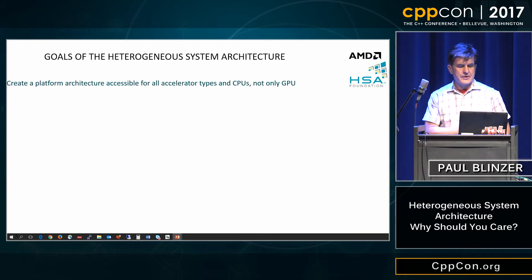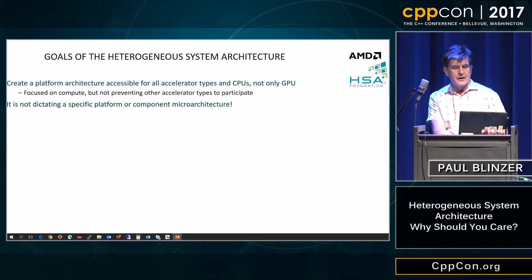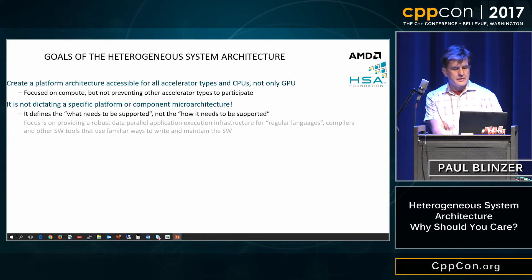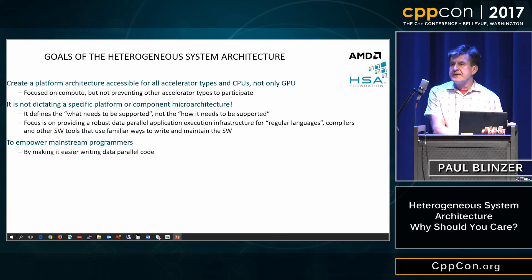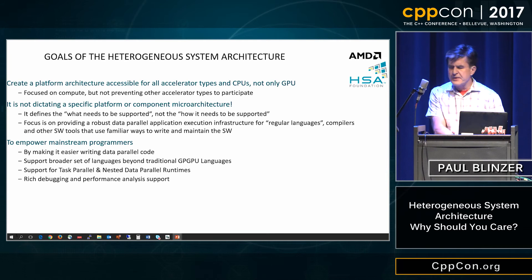What we've done is create a platform architecture that integrates all the different types of accelerators — GPU, CPU, and everything else. It's focused on compute, but other accelerators can participate. It doesn't dictate any particular architecture; many different architectures are available. It provides a robust foundation for programming, empowers mainstream programmers, makes it easier to write code in high-level languages, supports a broad range of platforms, and supports many data parallel runtimes you're already familiar with.